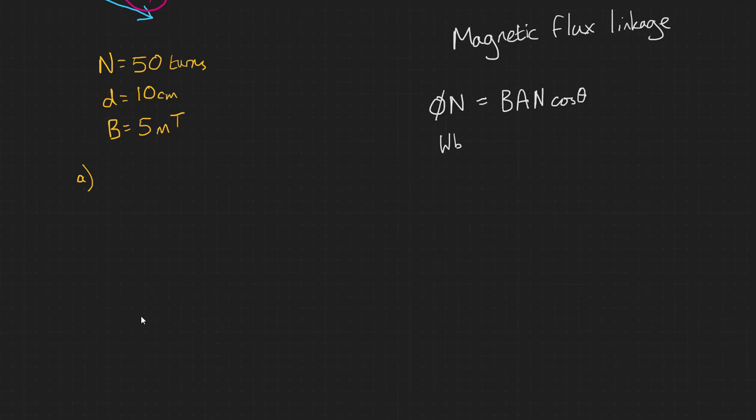Part A, calculate the magnetic flux in the coil. Part B, calculate the flux linked by the coil, the magnetic flux linkage. And Part C, what is the magnetic flux linkage when the coil is rotated by 20 degrees away from the perpendicular.